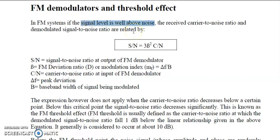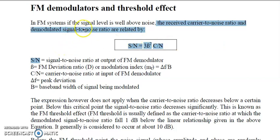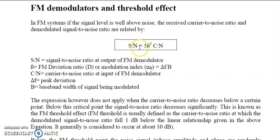In the FM demodulator, if the level of signal is comparably better than the noise level, then the received carrier-to-noise ratio and demodulated signal-to-noise ratio can be related by this equation: signal-to-noise ratio is equal to 3 beta squared multiplied by the carrier-to-noise ratio.